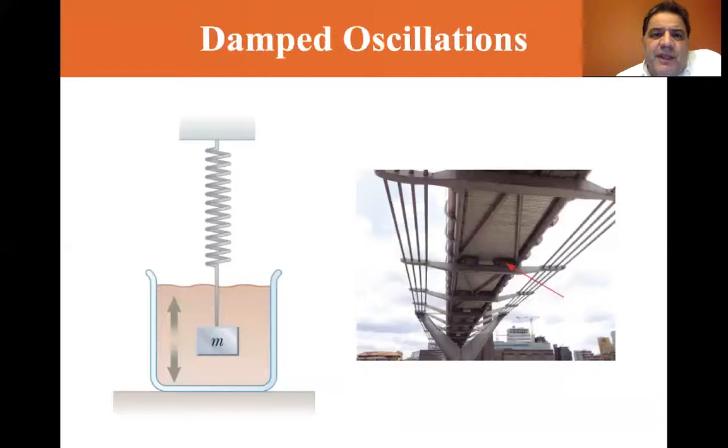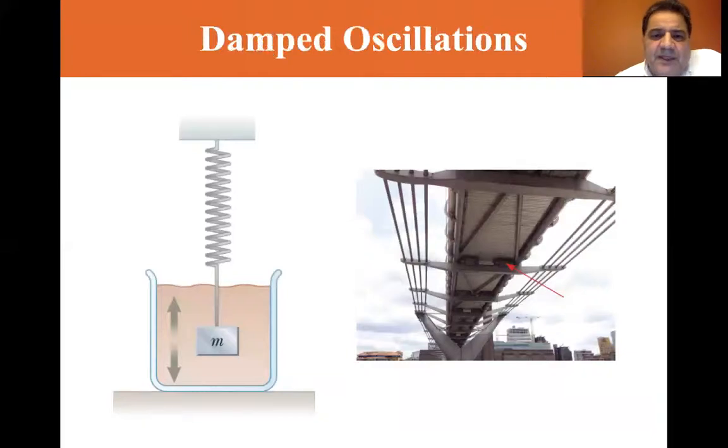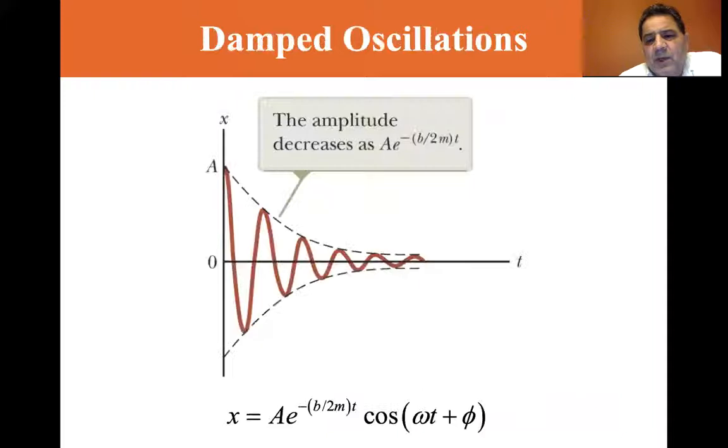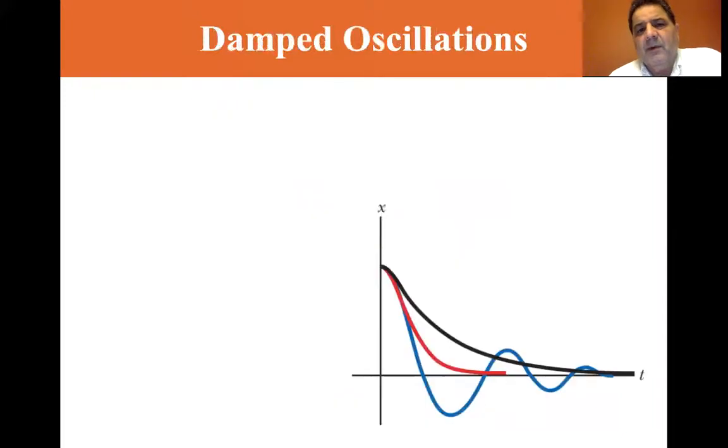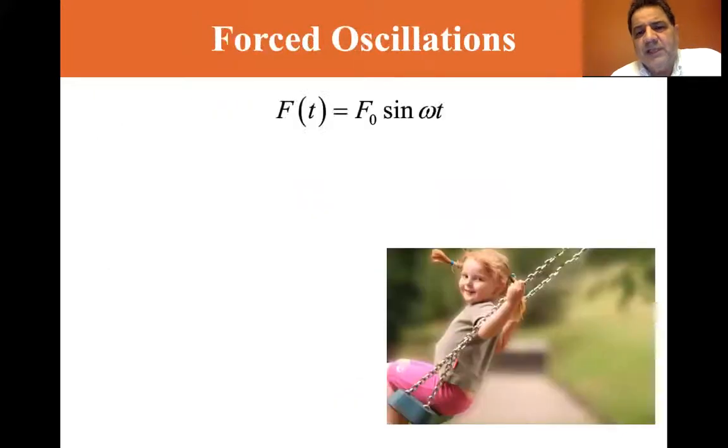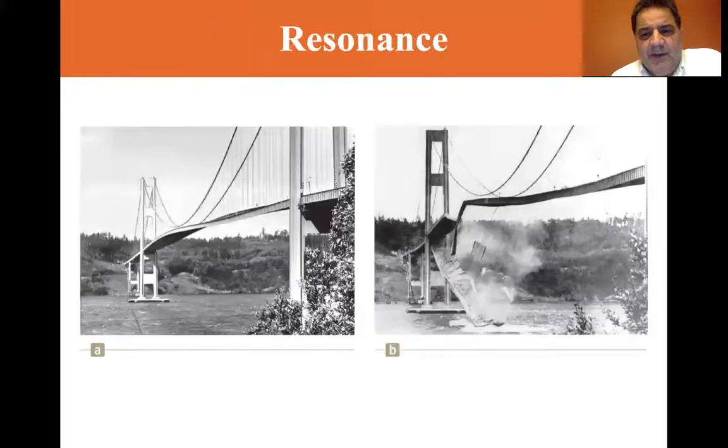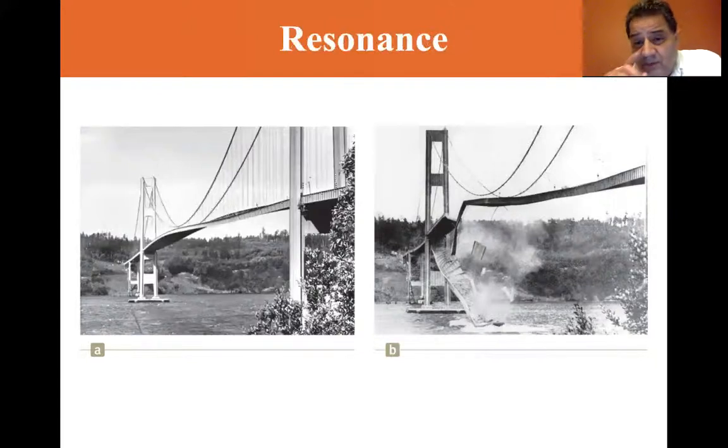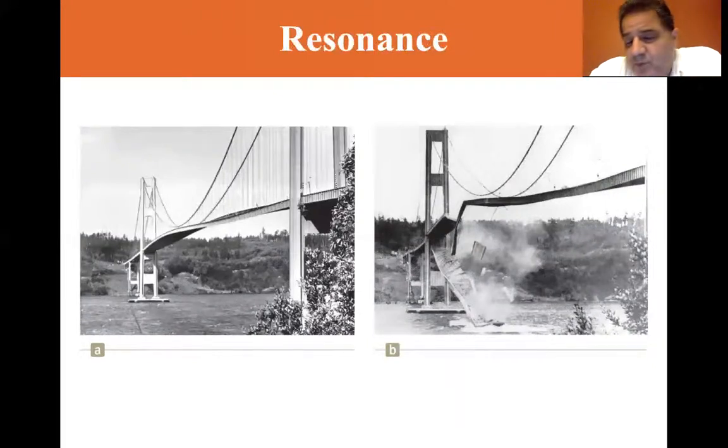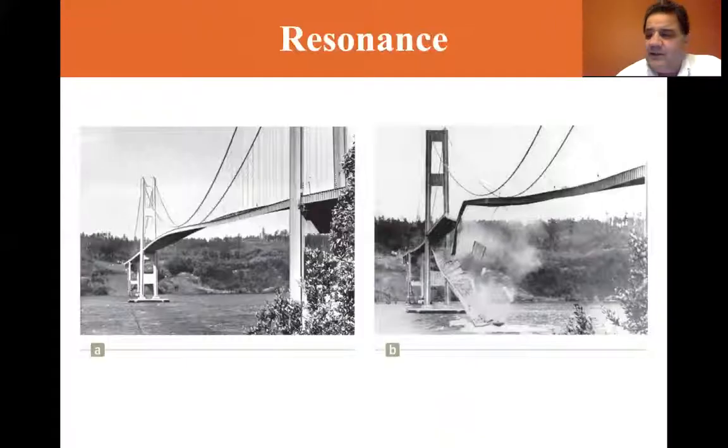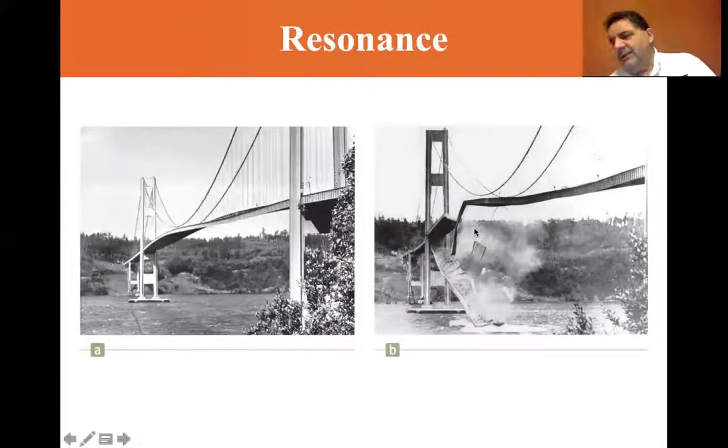And that's going to do it for the end of, we're not going to do damped oscillations. We're not going to do forced oscillations, but I did want to point out to you, this is the drawing of the Tacoma, or not a drawing, this is actual screen captures of the resonance that occurred at the Tacoma Narrows Bridge. You can look up the Tacoma Narrows Bridge, and they have video of it collapsing. I think that's it. So we're going to end chapter 15 here.